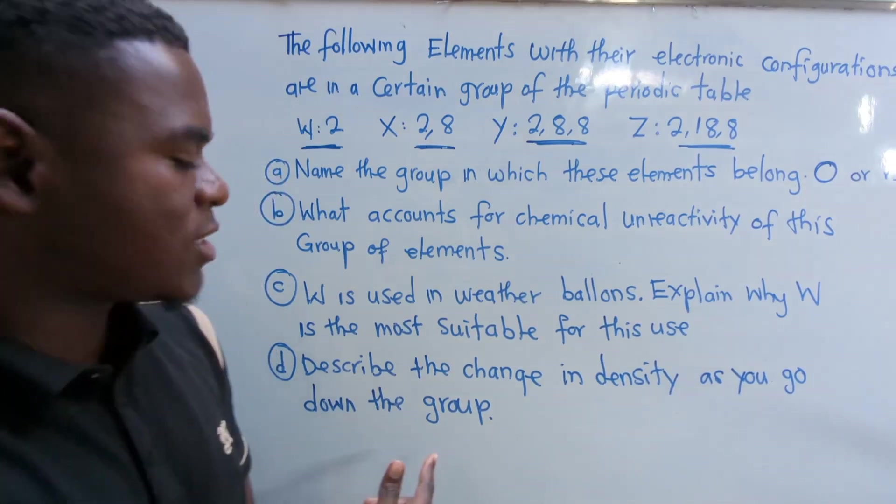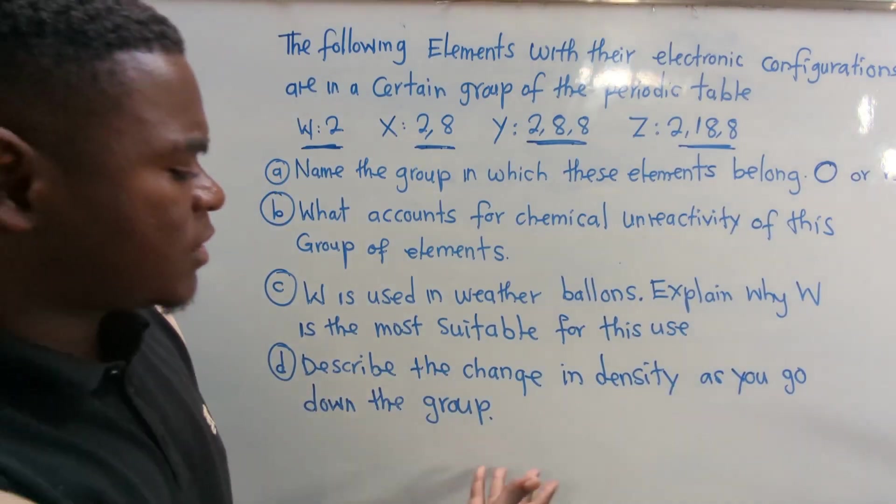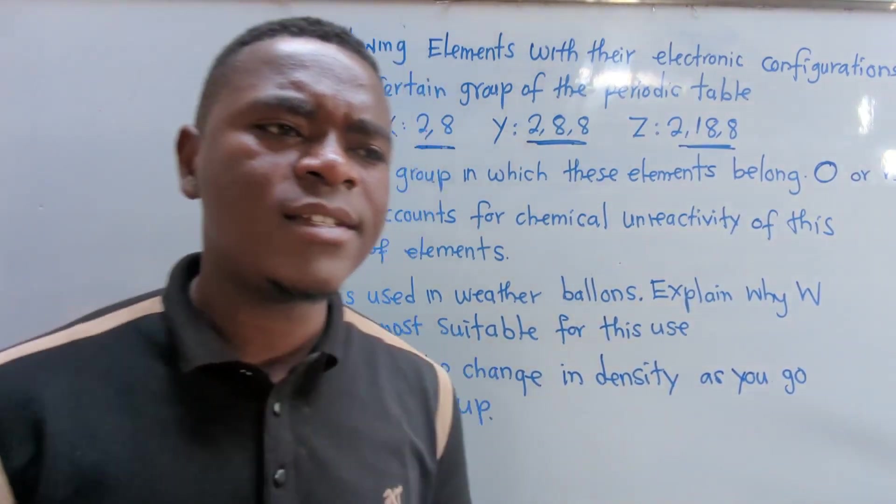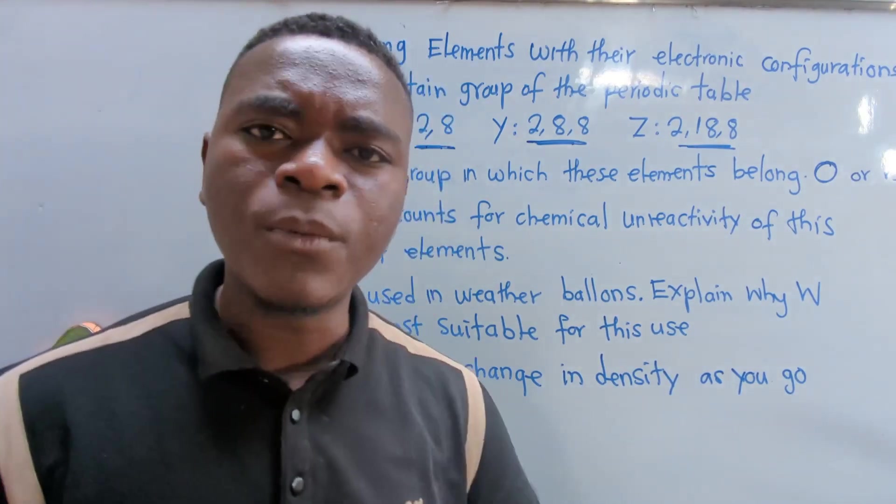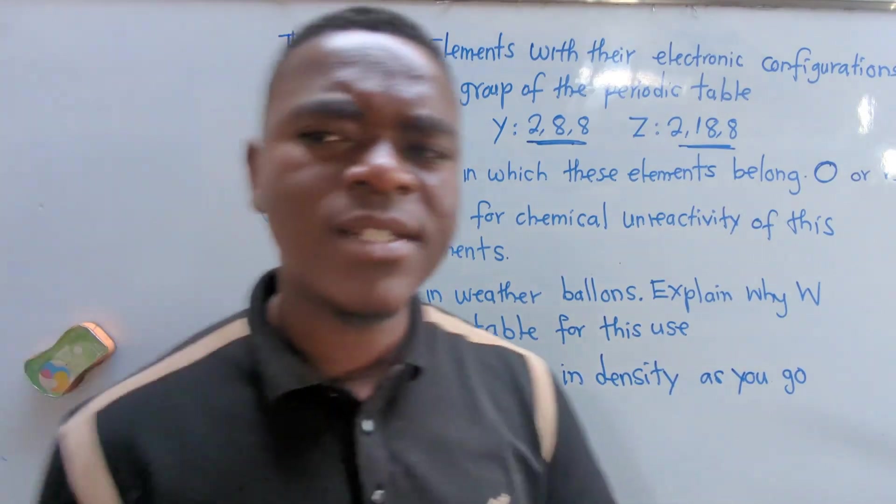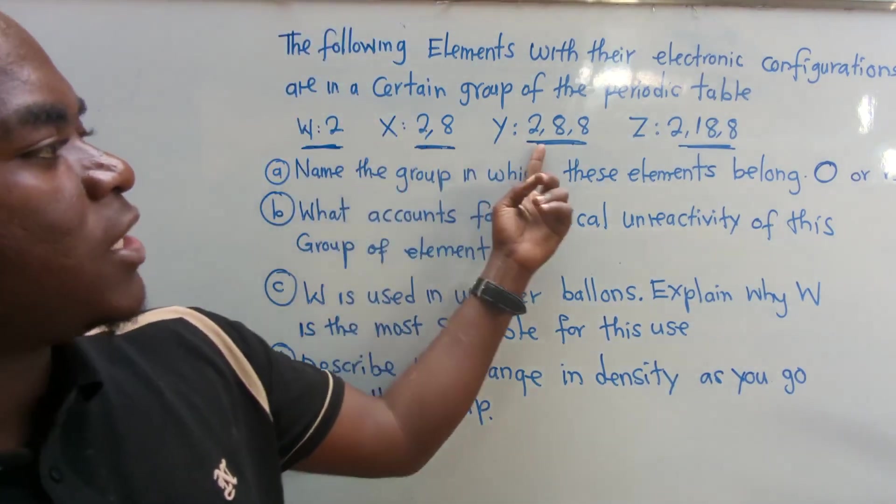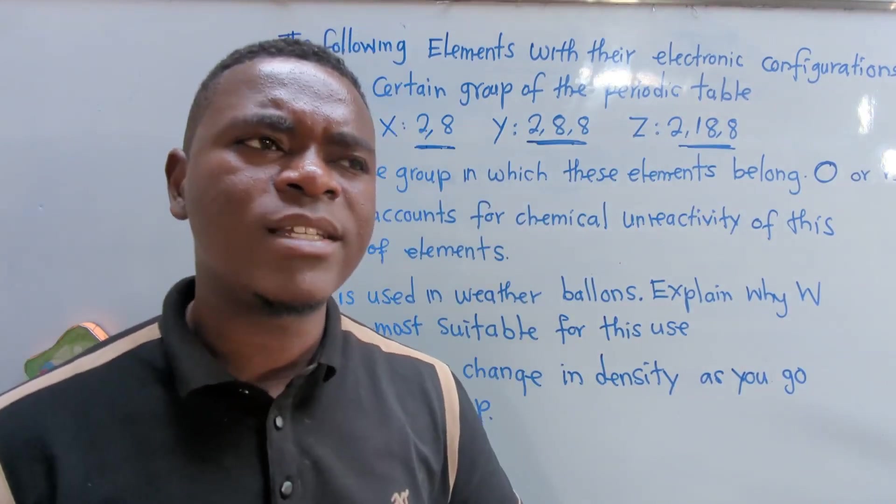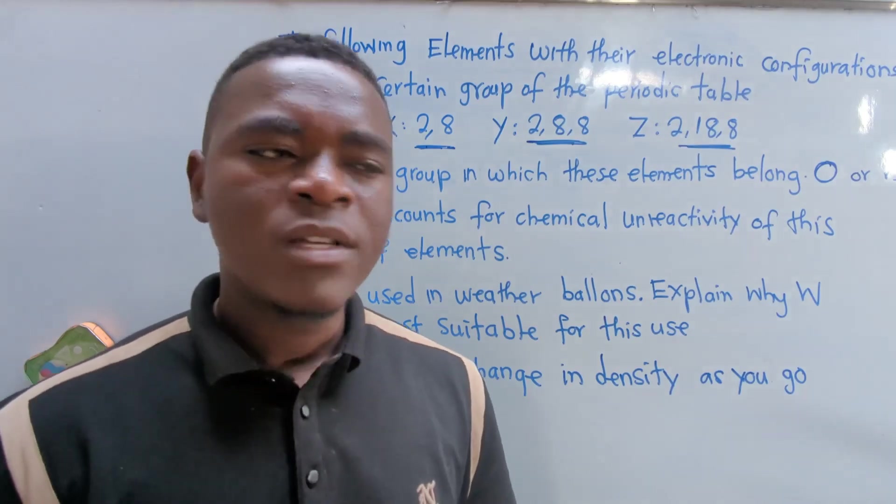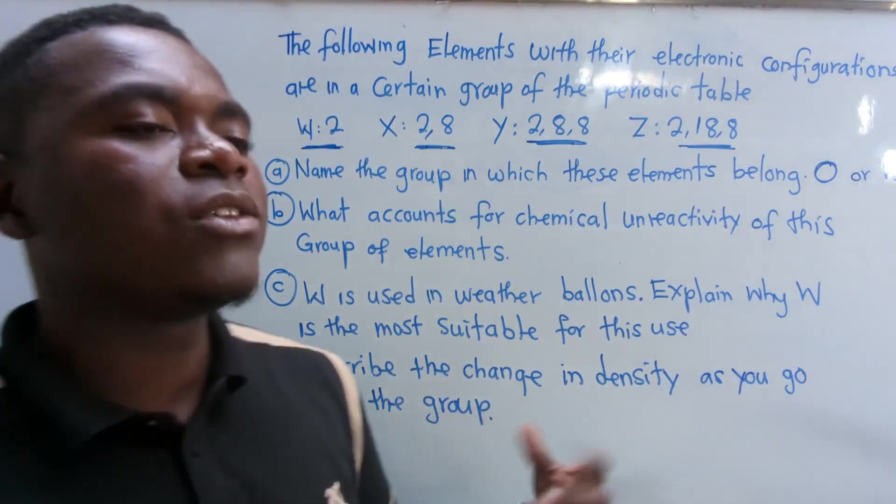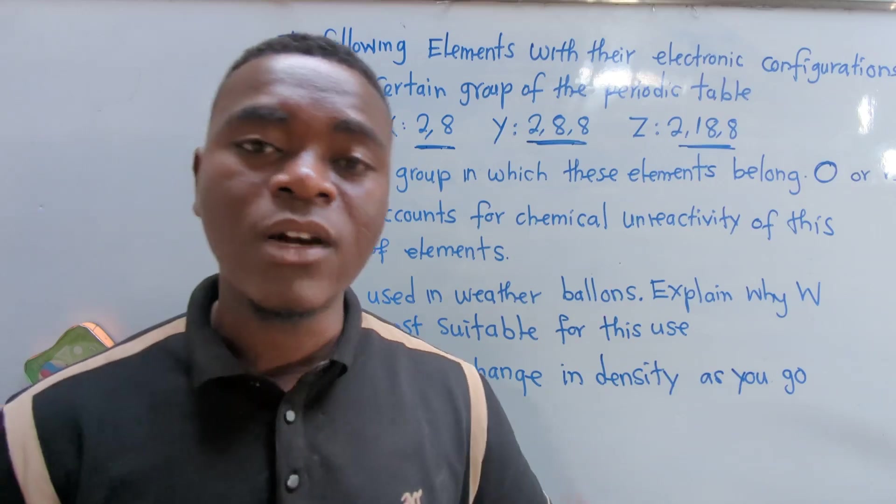We now move on to this question. Describe the change in density as you go down the group. So the change here is that density gets to increase as you go down that group. Because you notice that even the atomic number gets to change. So you can now check here. The atomic number gets to change even as you go down the group. So this is the answer where you just say it gets to increase as you go down the group.